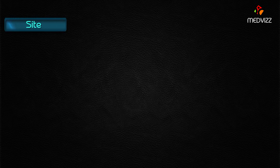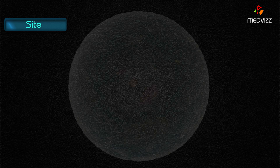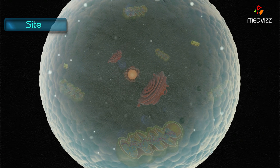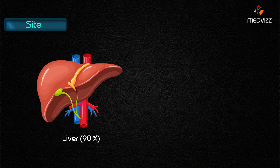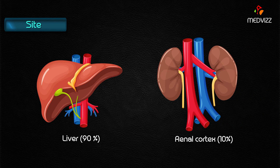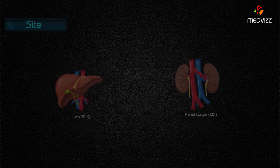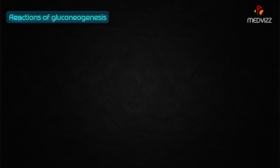What is the site of gluconeogenesis? Gluconeogenesis occurs mainly in the cytosol. Although some precursors are produced in the mitochondria, the major steps take place in the cytosol. It mainly occurs in the liver — 90% — and to a lesser extent in the renal cortex — 10%.